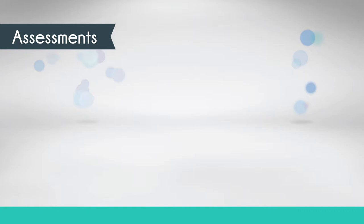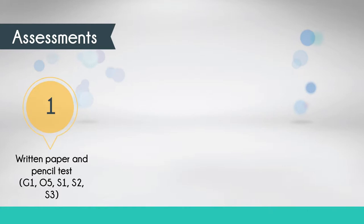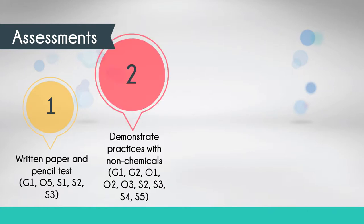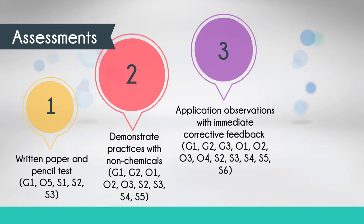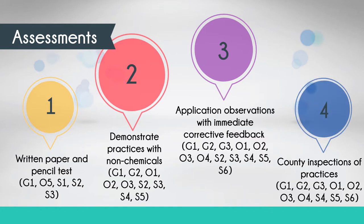The assessments to determine whether or not learners have met the unit instructional objectives are a written paper and pencil test, a demonstration of practices with non-chemicals, application observations with immediate corrective feedback provided by trainers and managers, and county inspections of practices.